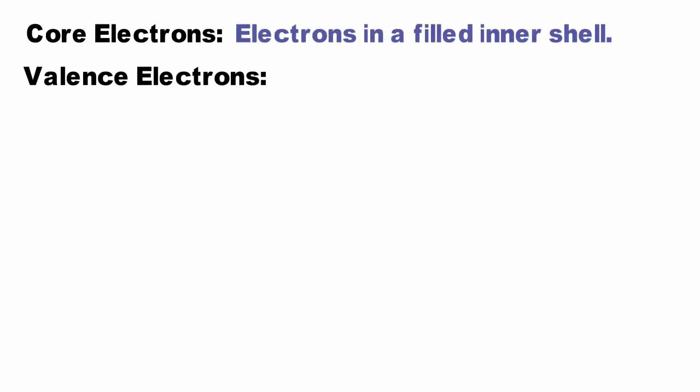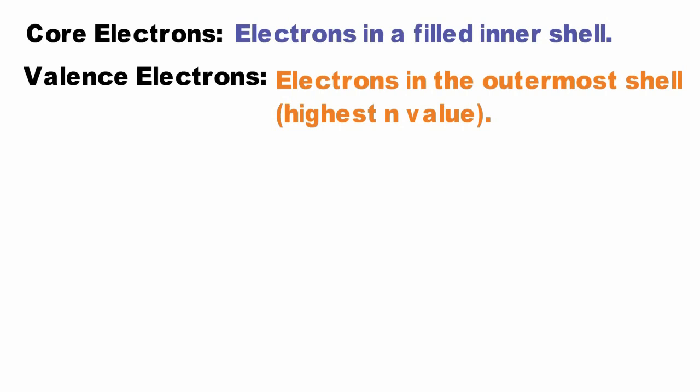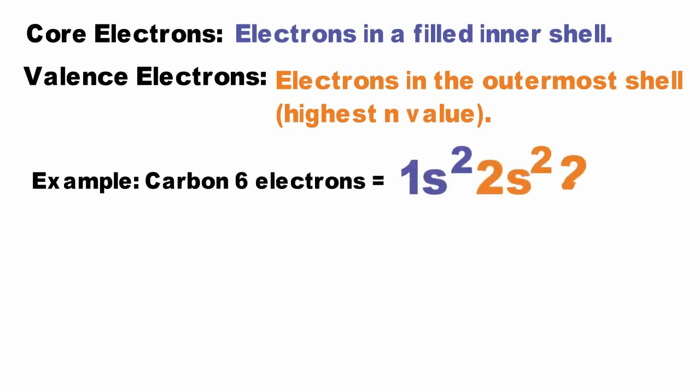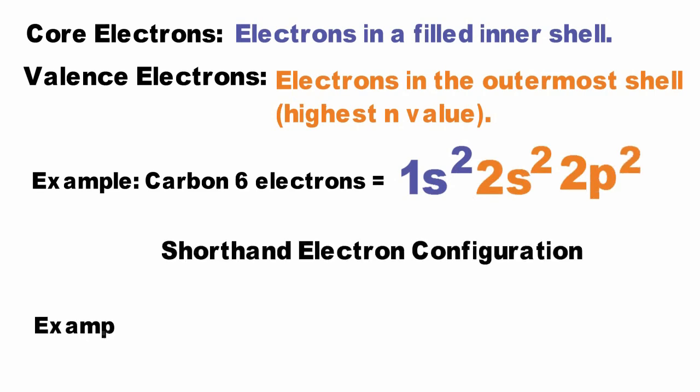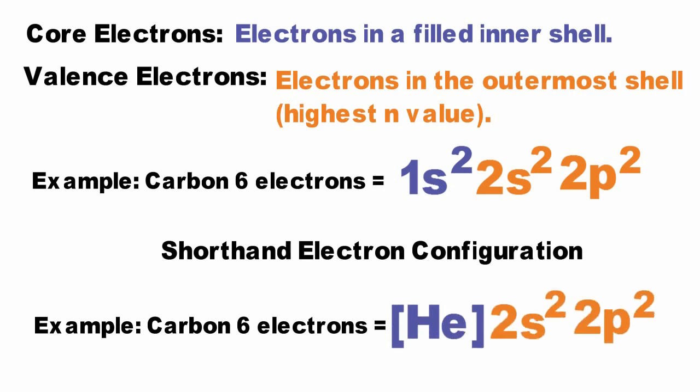Electron configurations become long to write when atoms have a lot of electrons. The use of a shorthand configuration is common. To write the shorthand configuration, we need to know the difference between core electrons and valence electrons. Core electrons are those in the filled inner shells of an atom. The valence electrons are the electrons in the outermost shell, the highest n value. The valence electrons largely determine an atom's chemical behavior, and the short-form electron configuration highlights the valence electrons. When writing a shorthand configuration, a substitution for the core electrons is used, which is the previous noble gas in square brackets. For carbon, the shorthand configuration is helium, 2s2, 2p2.